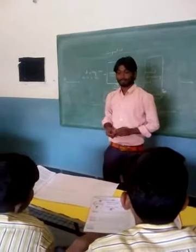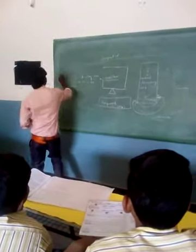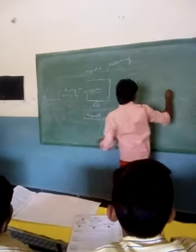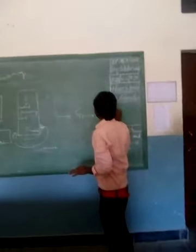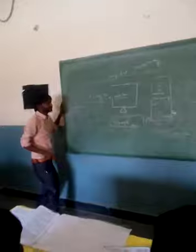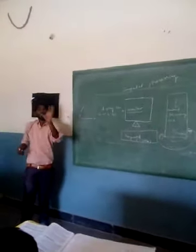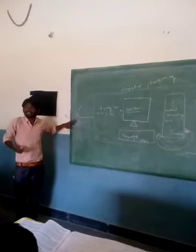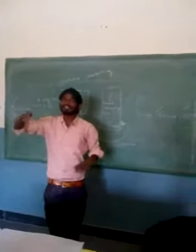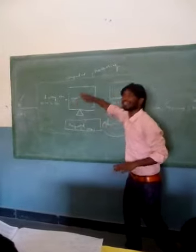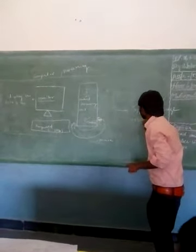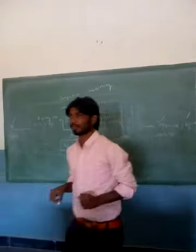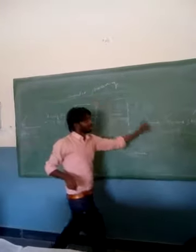Now, some parts of the computer. There are four functions: one is input, second is processing, third is output, and after the output comes storage. Input means if you want to enter anything — for example, if you want to do the calculation 2 plus 3, that is our input. Processing happens, the result is 5, and it is shown on screen. Then 2 plus 3 equals 5 is stored in the system. This is the work of input, processing, output, and storage.